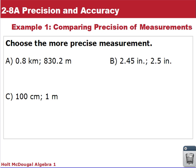So our first example we're going to look at is comparing precision of measurements. We want to, between each pair, choose a more precise measurement. For A, we have 0.8 kilometers and 830.2 meters.